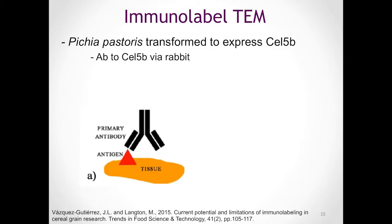The DNA sequence of the endoglucanase Cel 5B is known, and it was possible to use a eukaryotic yeast vector, Pichia pastoris, to transform it, insert the Cel 5B sequence, and then overexpress the enzyme. After the enzyme was cleaned up, it was then injected into rabbits to generate a primary antibody to this enzyme.